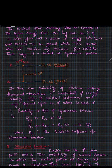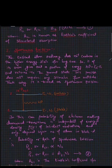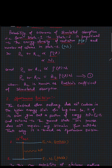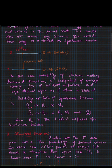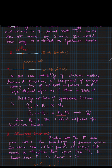The probability of spontaneous emission — written as P21 or R21, indicating a transition from state 2 to state 1 — depends only on the number of atoms present in the excited state, not on the energy density, since this is a natural process. This probability is proportional to N2, with proportionality constant A21, which is the Einstein coefficient for spontaneous emission.